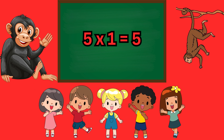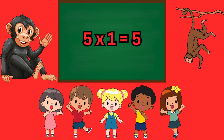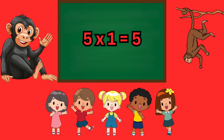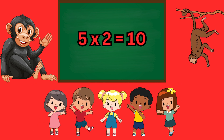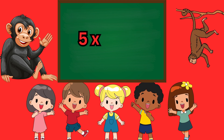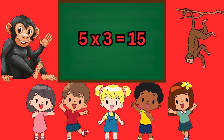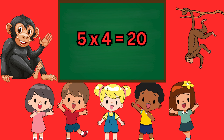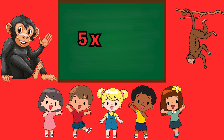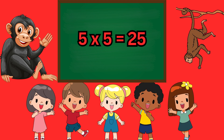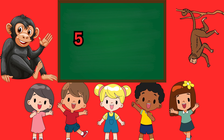Table of 5. 5 ones are 5, 5 twos are 10, 5 threes are 15, 5 fours are 20, 5 fives are 25.